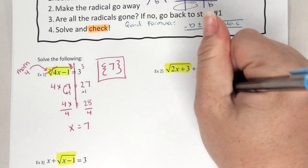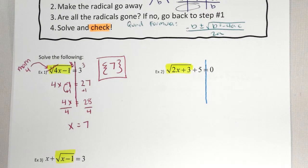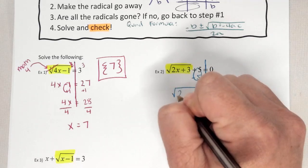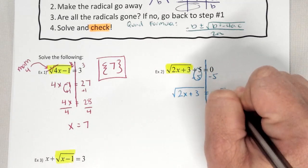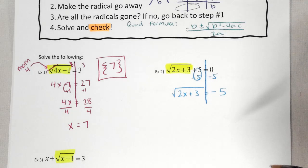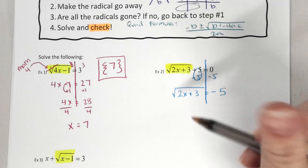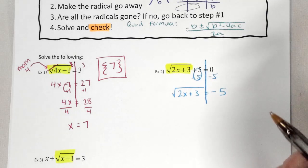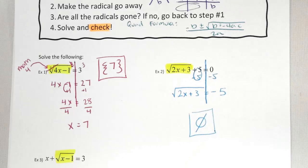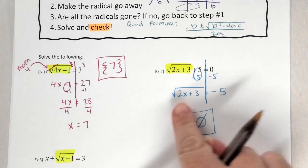Look at number 2. Is my radical isolated? No — what does it have with it? Plus 5. How do I get rid of plus 5? Subtract 5. So I get the square root of 2x plus 3 equals negative 5. If you ever take the square root of something, will it equal a negative? No — it's going to be imaginary if it's negative. So right away, what do I know my answer is? No solution, because your square root will never give you a negative.